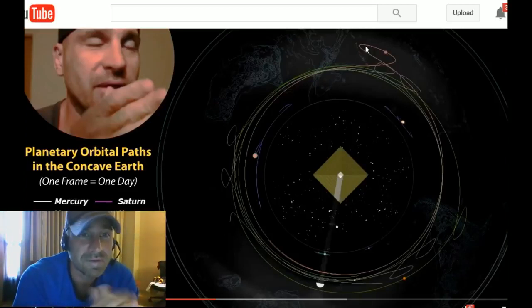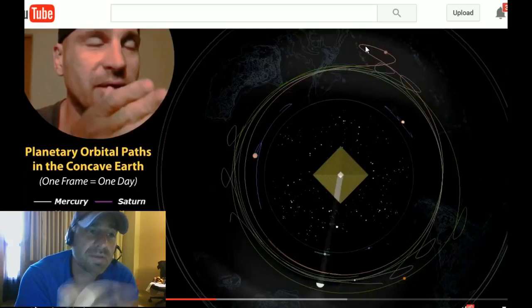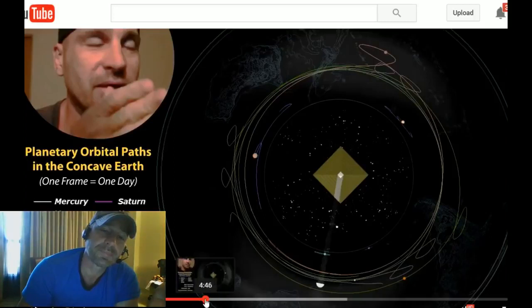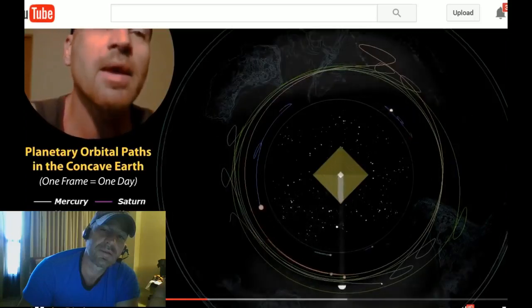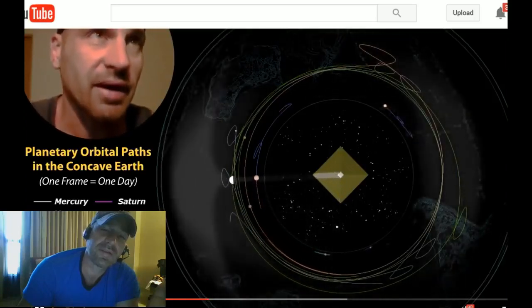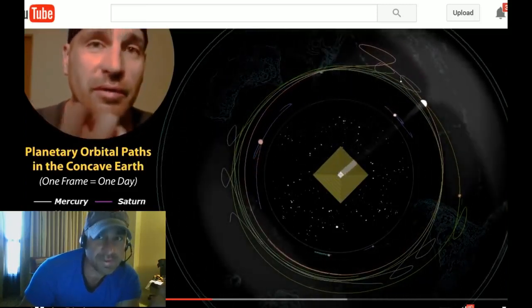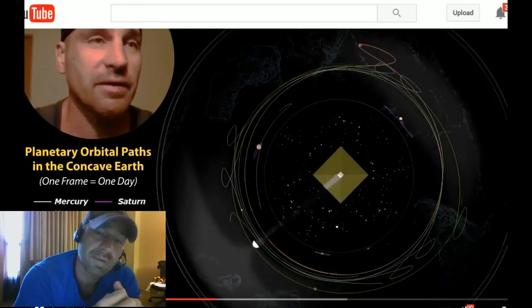And it maintains the same angular apparent size away from Earth because of that. That's the only logical answer to the retrograde motion of the planets, to the orbit of the planets. It doesn't work in a heliocentric model. Obviously it doesn't work in a flat model. This is the only thing that works, guys. So, that's what's going on. Planets are contained in transparent spherical tabernacles. And when they go into retrograde, they maintain the same apparent angular size because they're trapped within that tabernacle.